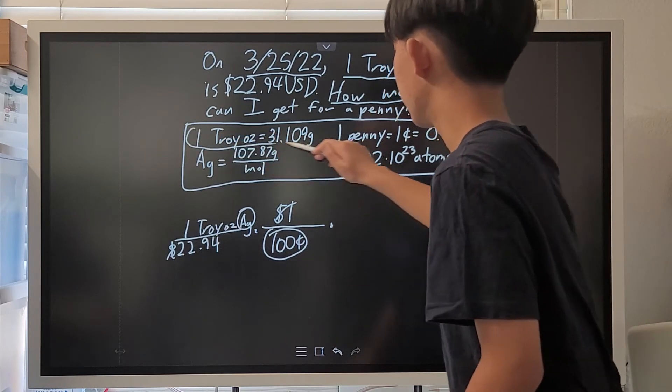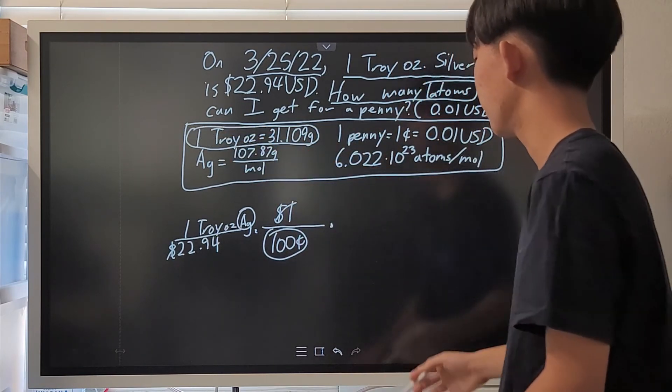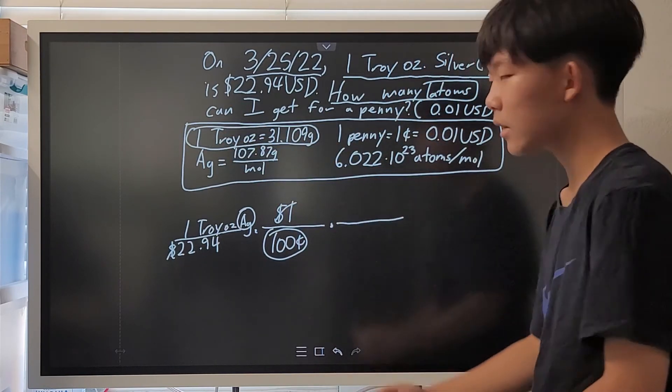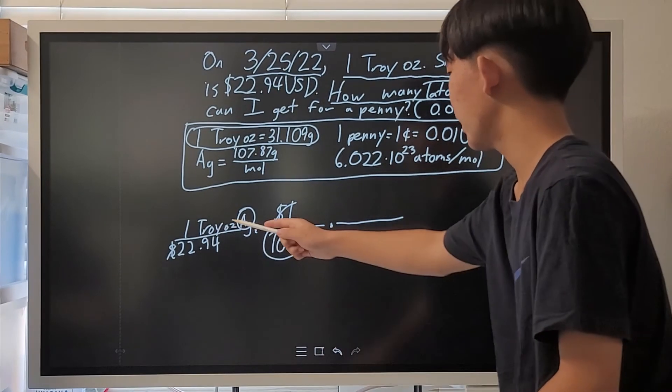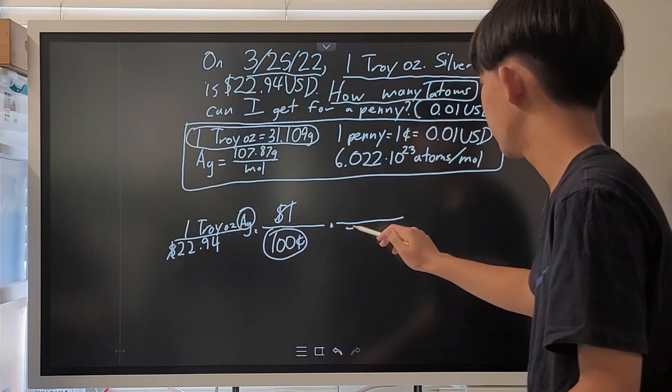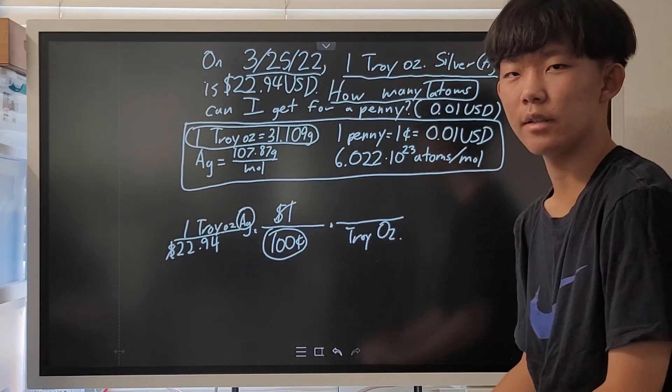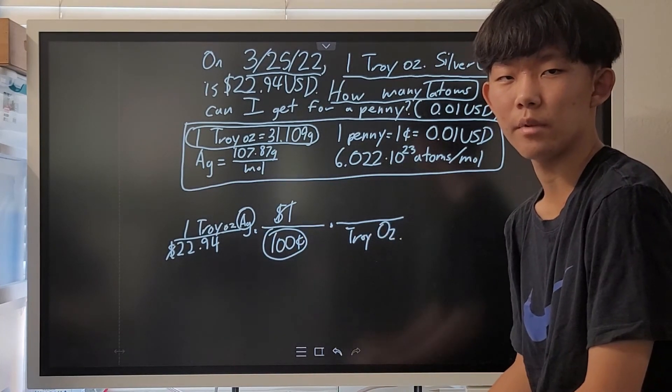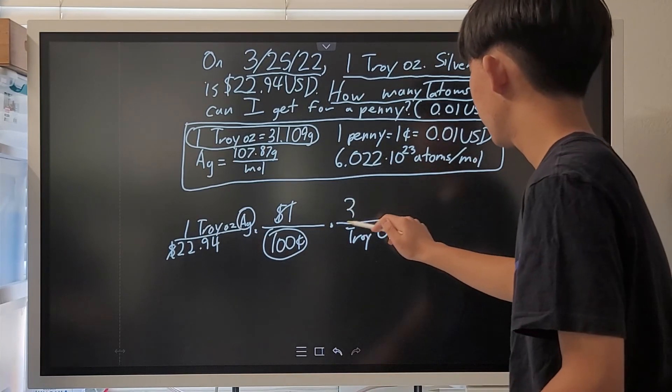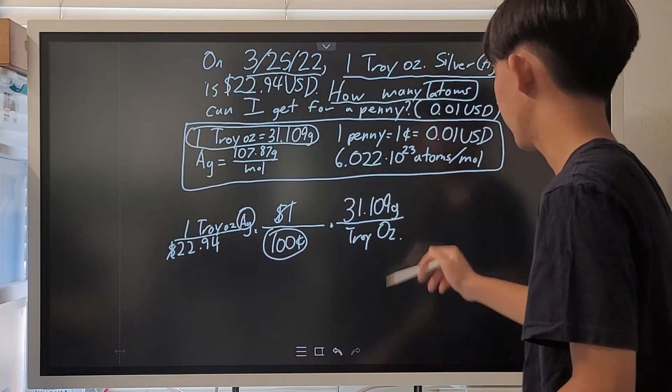So, first, let's convert troy ounces to grams, as given right here. Since we don't want troy ounces, and because troy ounces is in the numerator, troy ounces should be in the denominator. That is, if you want to get a really usable number. And in the top, we put 31.109 grams.